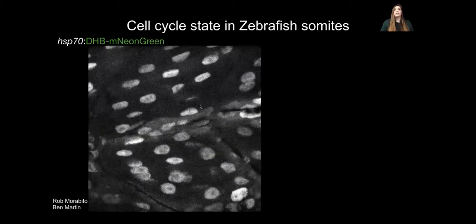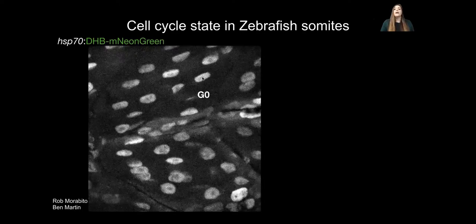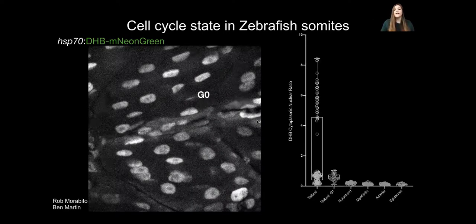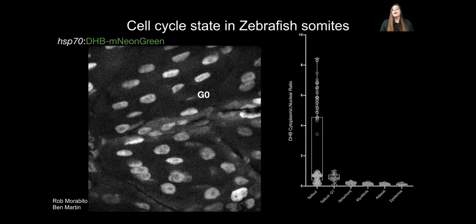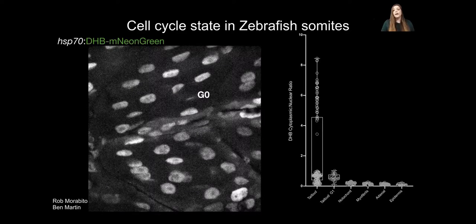At 72 hours post fertilization, when cells have terminally differentiated into myofibrils, we can see that these cells are now all in G0 with a high amount of sensor in the nucleus versus the cytoplasm. Quantifying multiple cells across the animal, in the early tail bud during development we have a range of DHB ratios as cells are in all phases. Selecting just those cells in the tail bud in G1 gives one value, and comparing to terminally differentiated cells in the myofibrils gives the G0 value, which is much lower than G1. We can therefore read out the G0/G1 boundary in zebrafish as well.